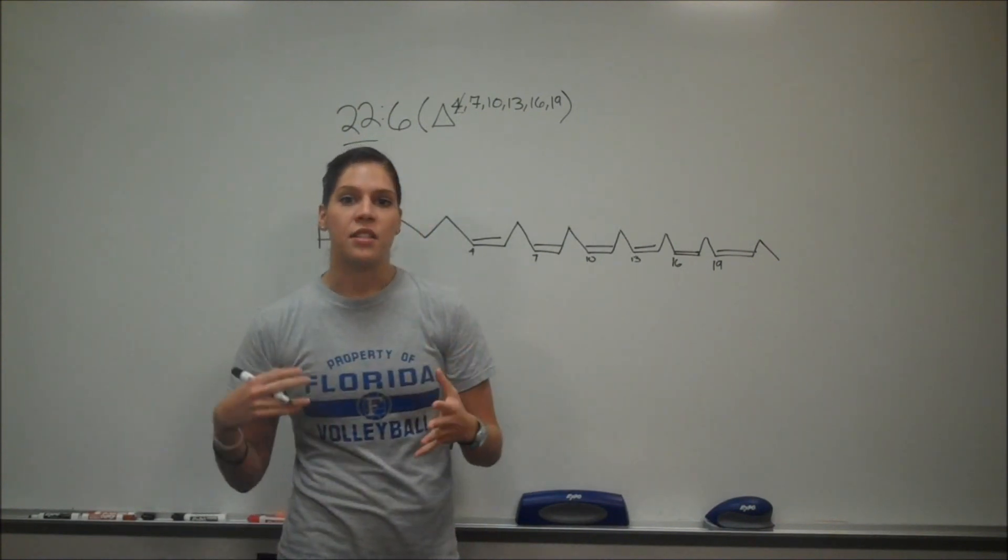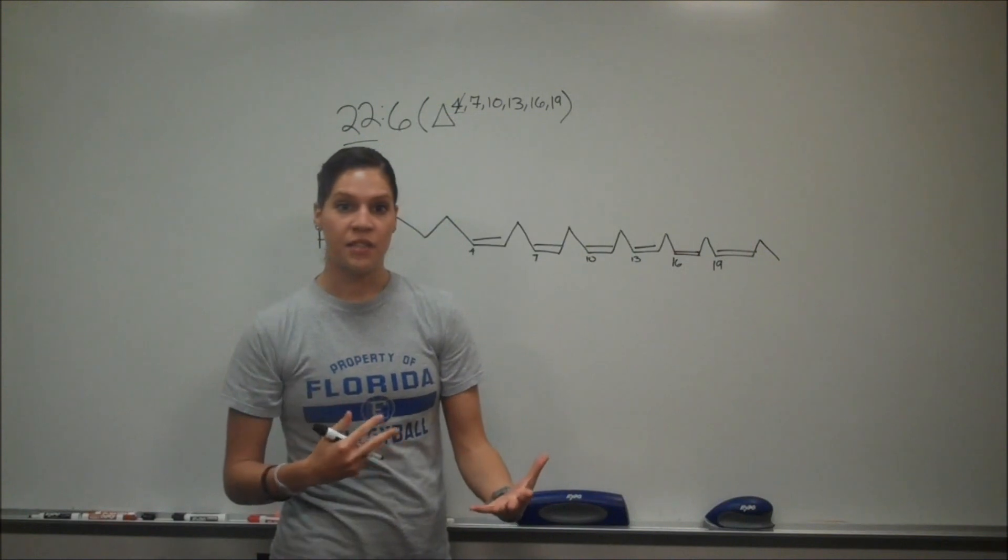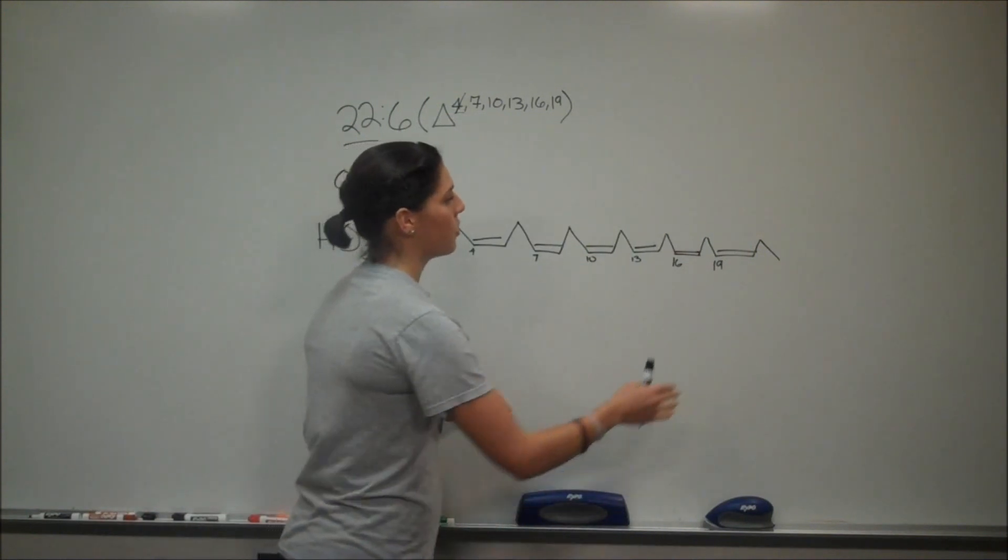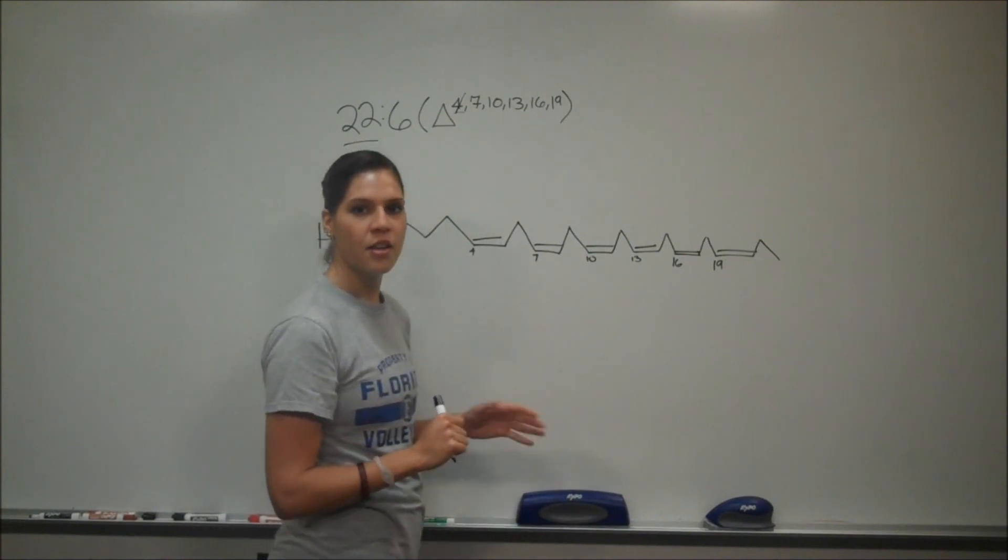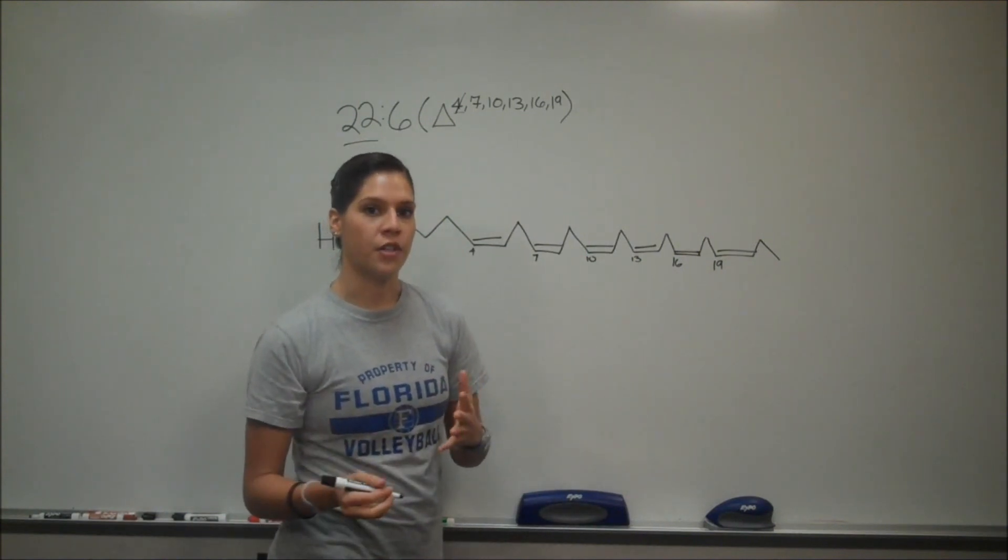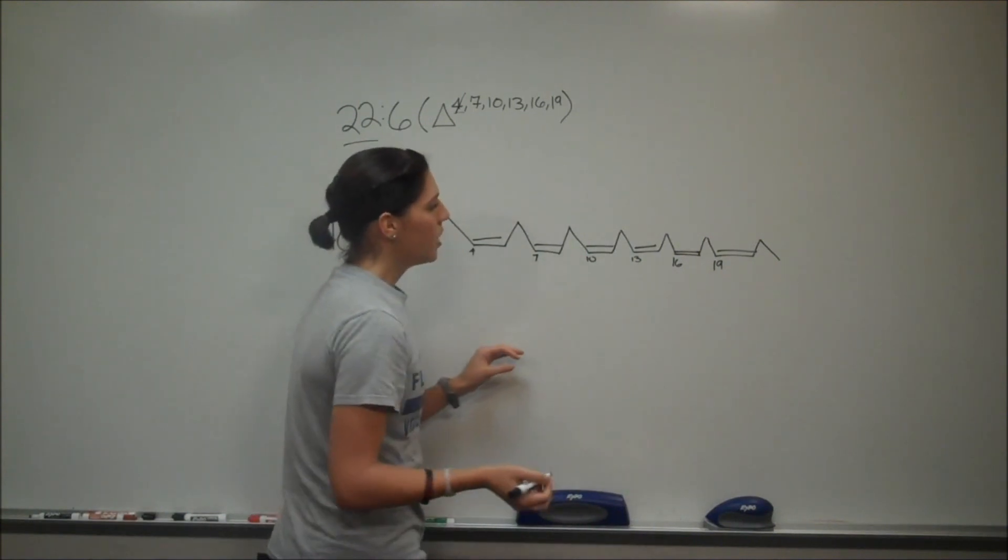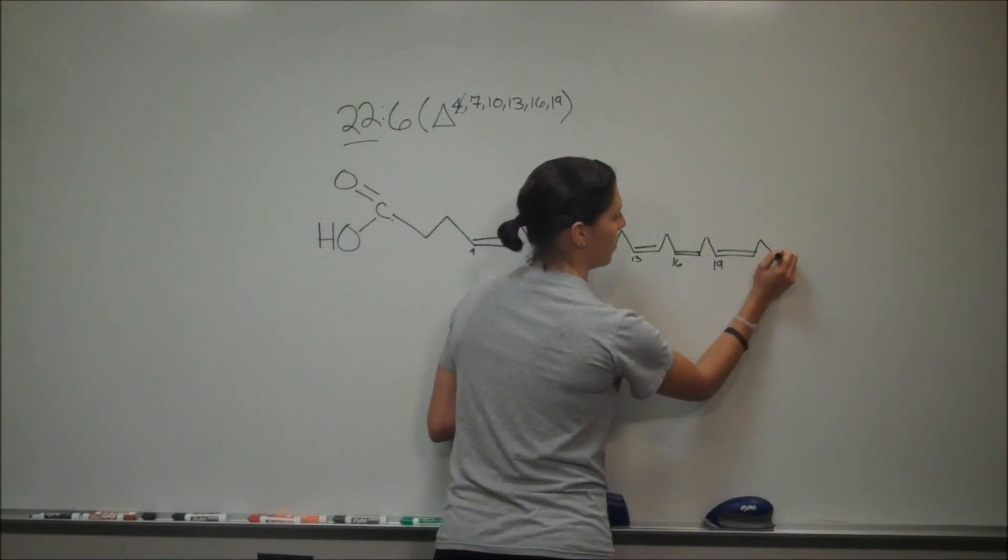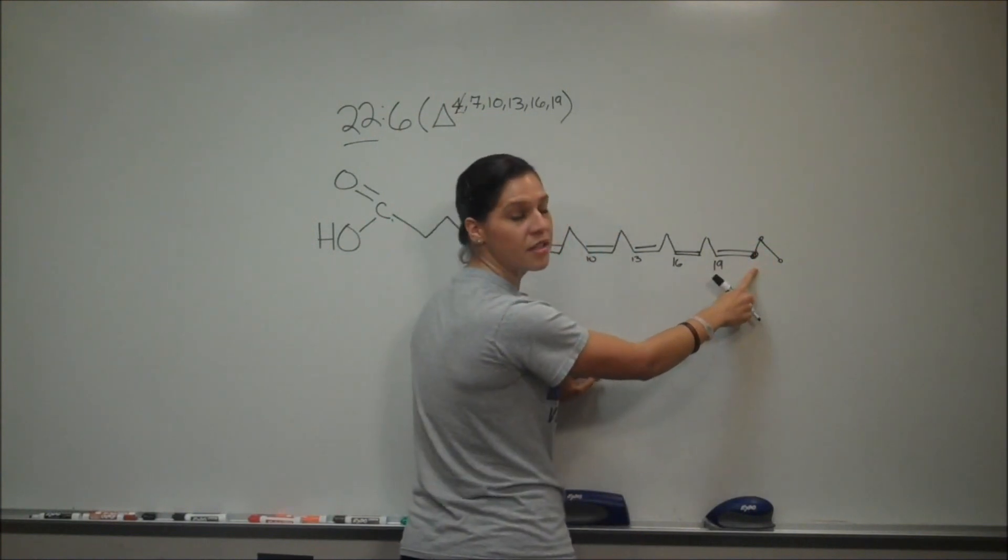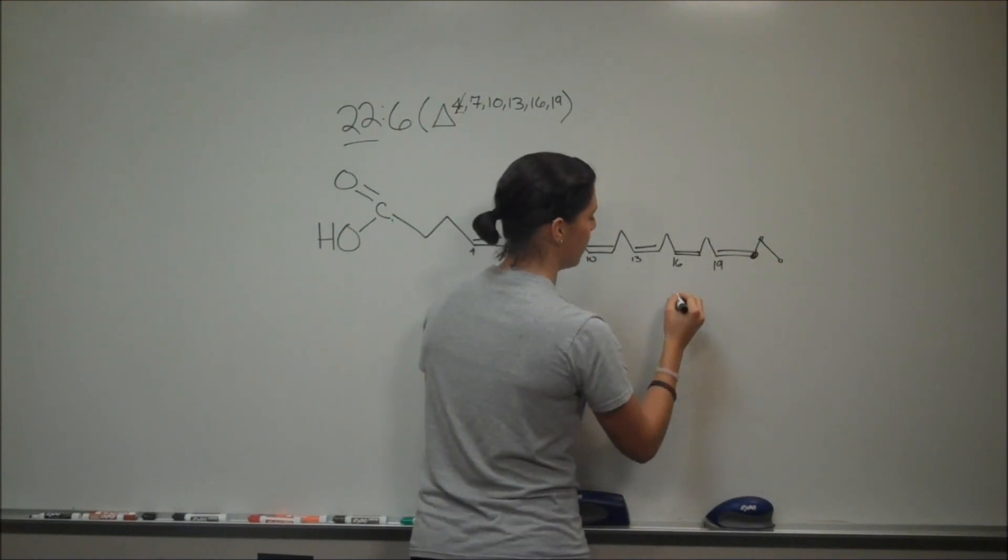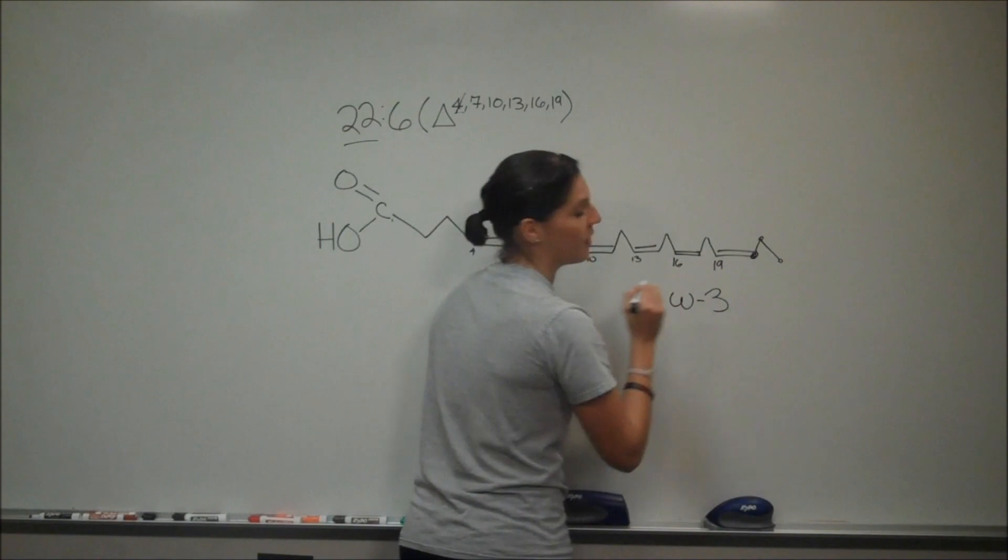The second part of this question is, is this an omega-3 or omega-6 fatty acid? Omega is when you start at this end and you count this way until you hit your first double bond. So we're going to start counting here. This is the first carbon: one, two, three. It took three carbons to get to the first double bond, so this is an omega-3 fatty acid.